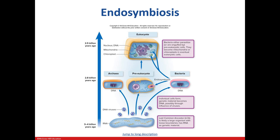Some evidence that backs this theory is that both the mitochondria and chloroplasts have a double membrane, which indicates they used to be their own cells. They have their own ribosomes, which resemble prokaryotes. And the mitochondria has its own DNA, which is circular, like a bacteria.